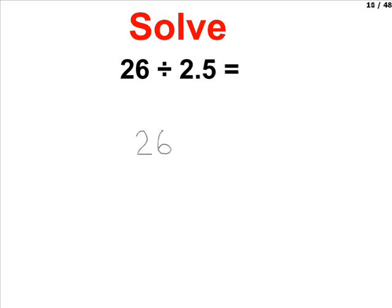After we write our division sign, take the first number shown, which is 26, and that should be written underneath the division sign. The second number, the number we're dividing by, is our divisor. That should be written on the outside.